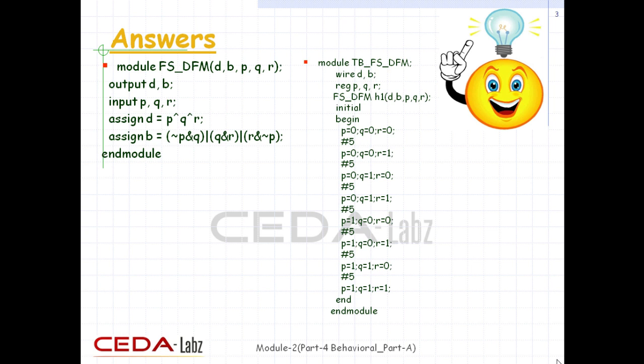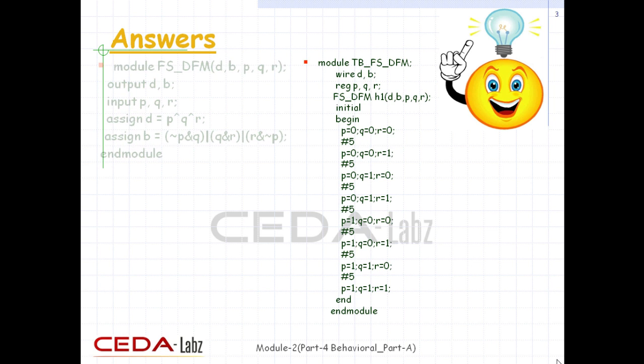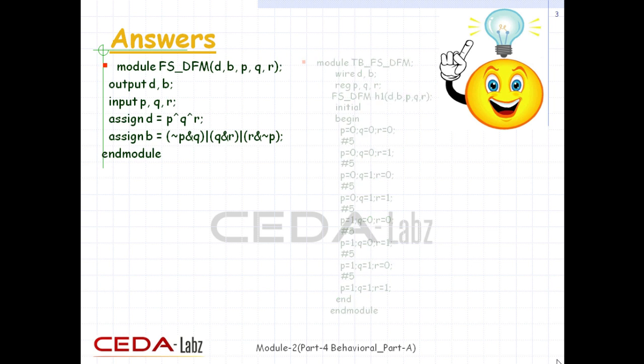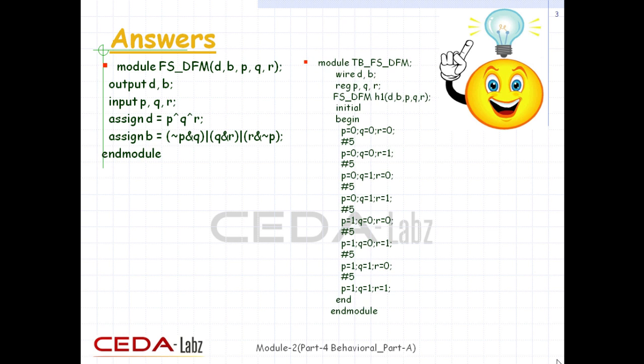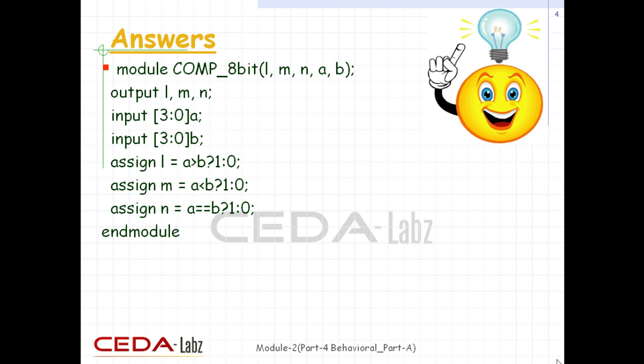The second question was to design a 1-bit full subtractor. Here are both design and stimulus block codes. The third question was to write a Verilog code for an 8-bit magnitude comparator. Here is the code.